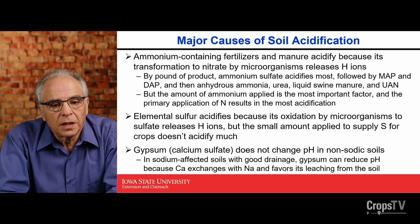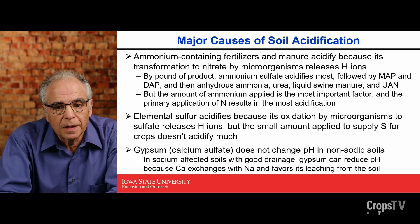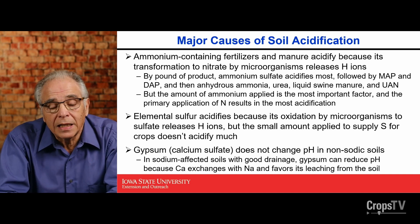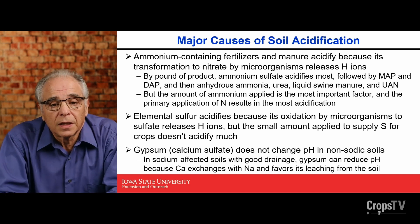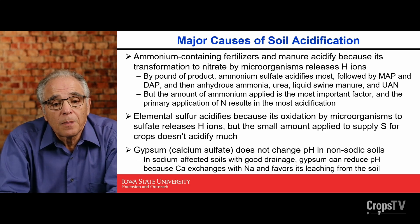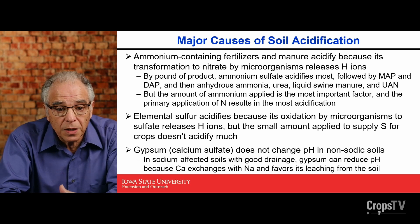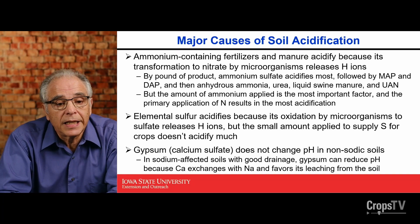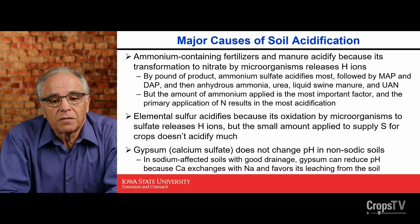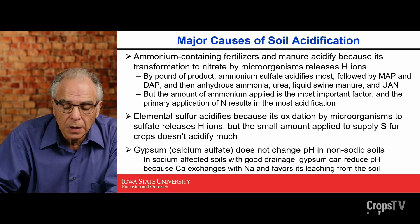We need to remind everybody that gypsum, which is calcium sulfate, does not change pH in non-sodic soils like we have in Iowa. In highly alkaline, sodium-affected soils like in the western Great Plains or the mountain states, when the soils have good drainage, application of gypsum can reduce pH. Normally pH there can be 9 or 10 because the calcium exchanges with sodium and favors leaching from the soil, and that can reduce the pH.